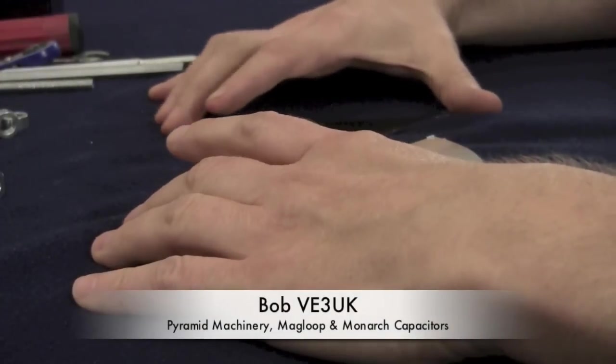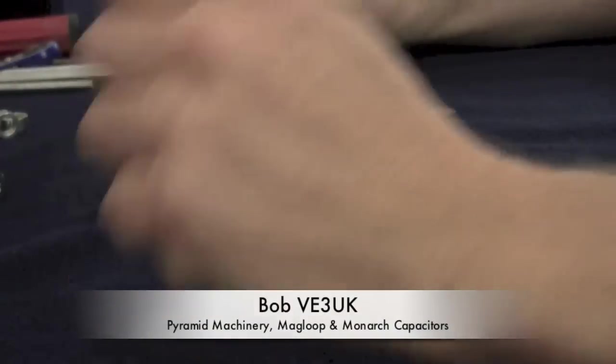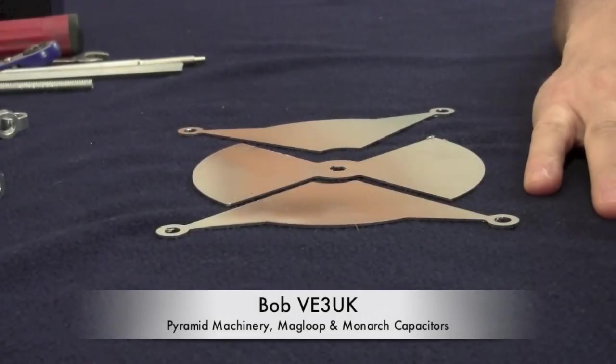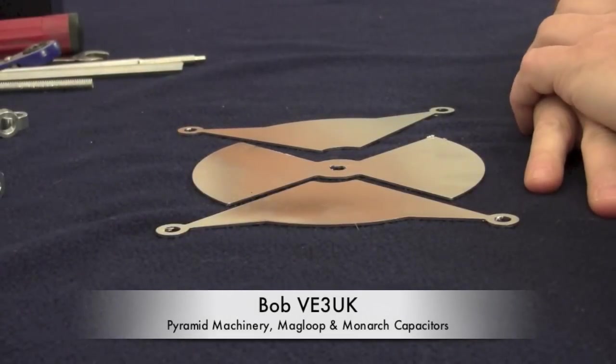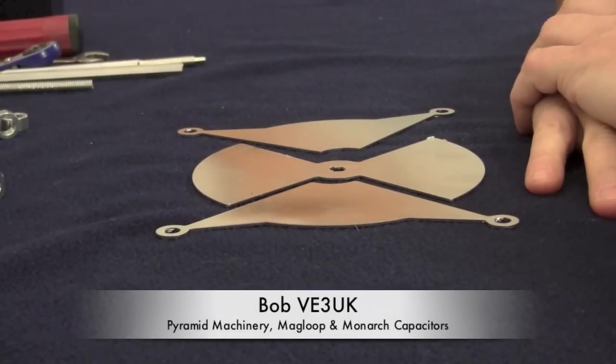Hello, I'm Bob Lashina of VE3UK from monarchcapacitors.com. I also run and own magloop.com and those are subsidiaries of my parent company which is Pyramid Machinery.